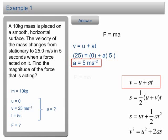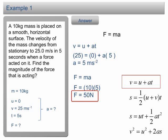Now, we can use F equal to ma to find the force. Substitute the values of m and a. F equal to 50 N. The magnitude of the force is 50 N.